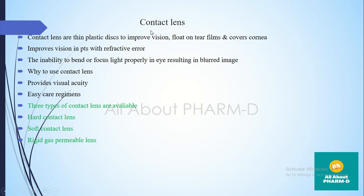Now we discuss contact lenses. Contact lenses are basically thin plastic discs — thin light plastic sheets used to improve vision. They float on the tear film and cover the cornea, essentially serving as a replacement for eyeglasses. Sometimes they are placed permanently in the eye; sometimes they are daily wear or extended wear.